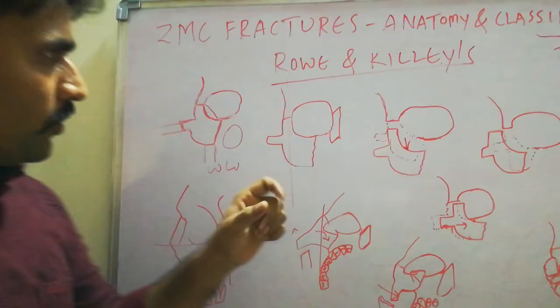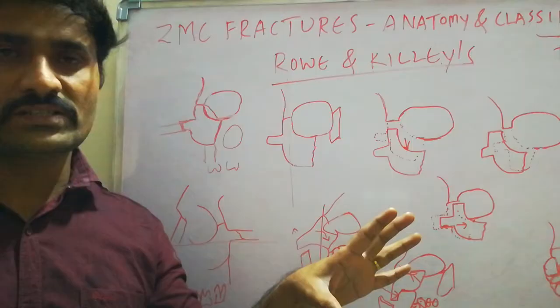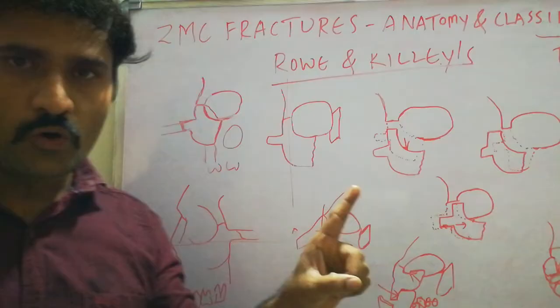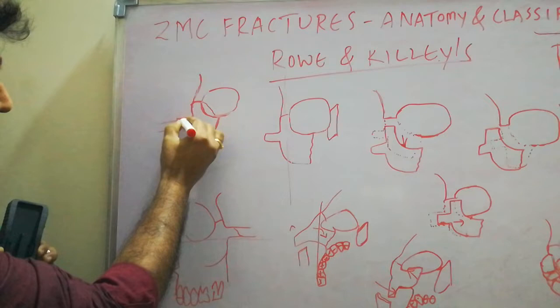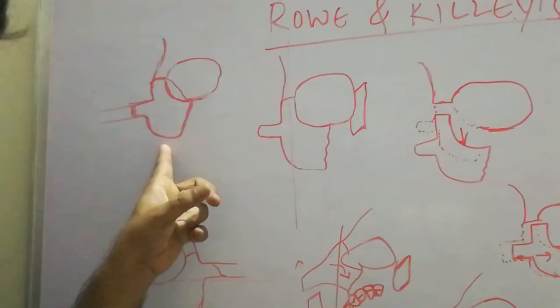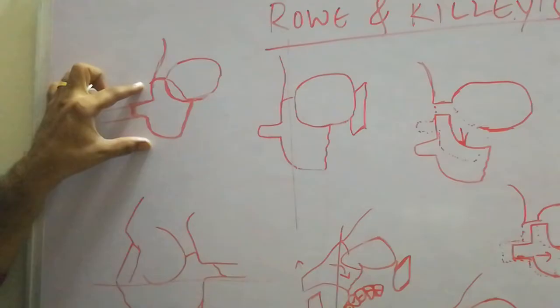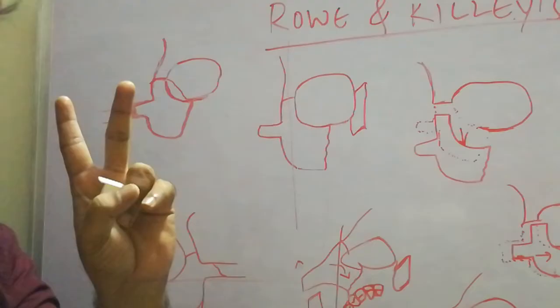Under the Rowe and Killey classification, there are eight types of ZMC fracture categories. Type 1 is fractures without any displacement. There will be fractures involving all four suture areas but without any displacement of the zygomatico-maxillary complex. Type 2 is isolated zygomatic arch fractures.